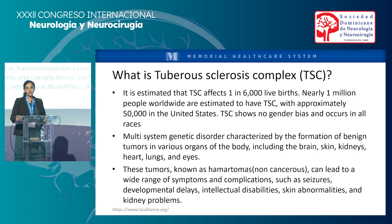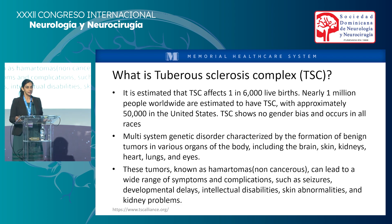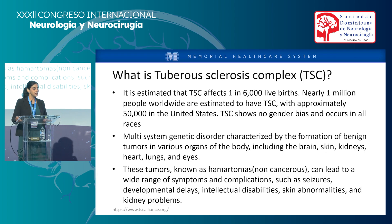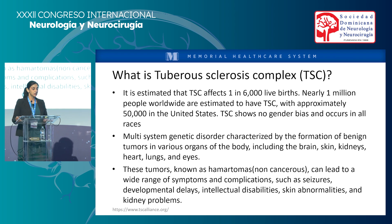So what is TSC? Tuberous sclerosis complex is a multi-system genetic disorder characterized by the formation of benign tumors called hemerotomas, which are non-cancerous, in various organs of the body, including brain, skin, kidney, heart, lungs, and eyes.